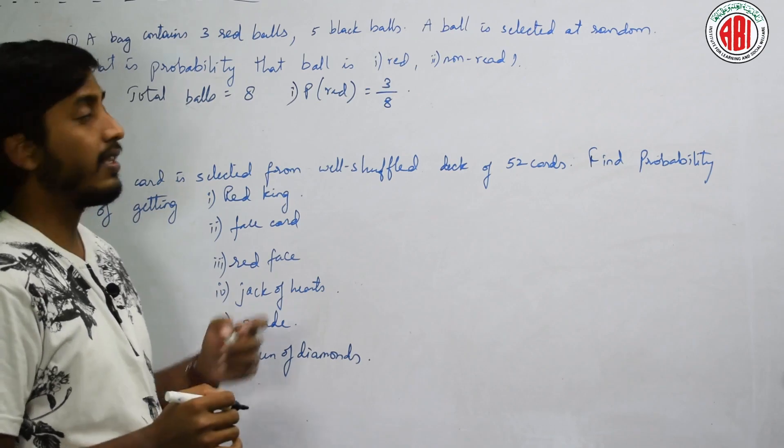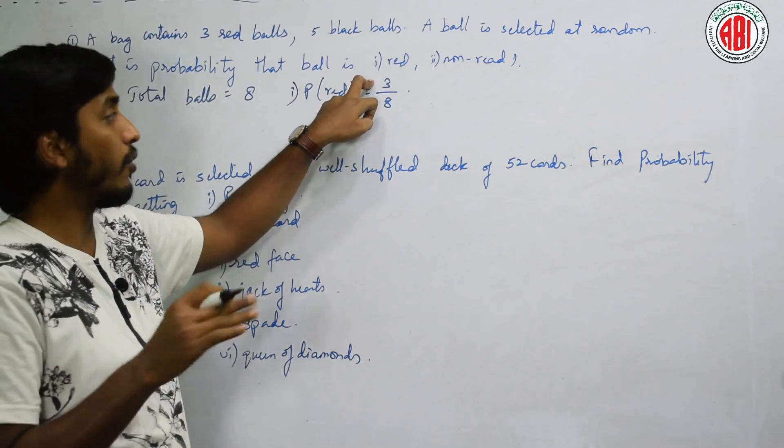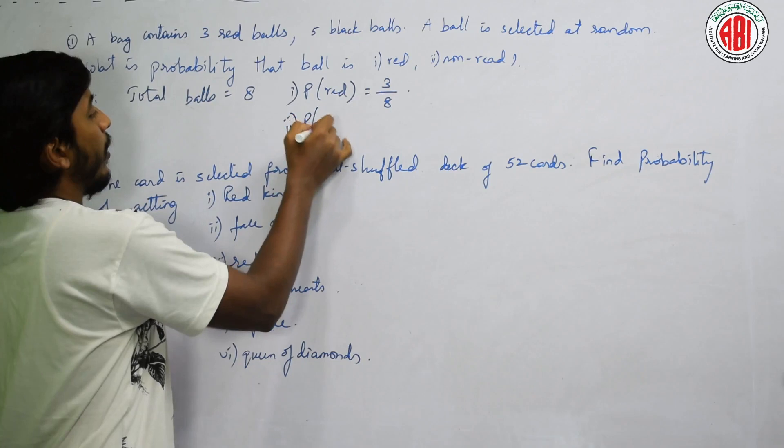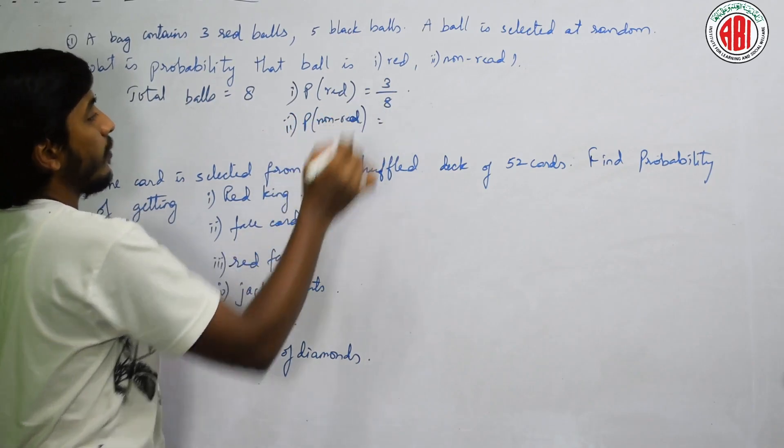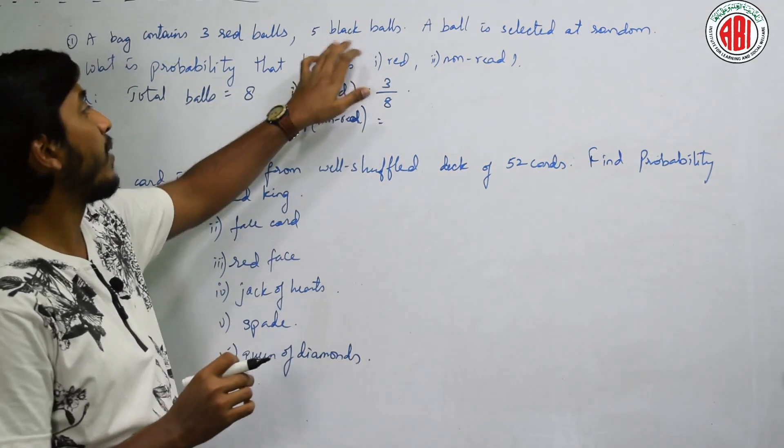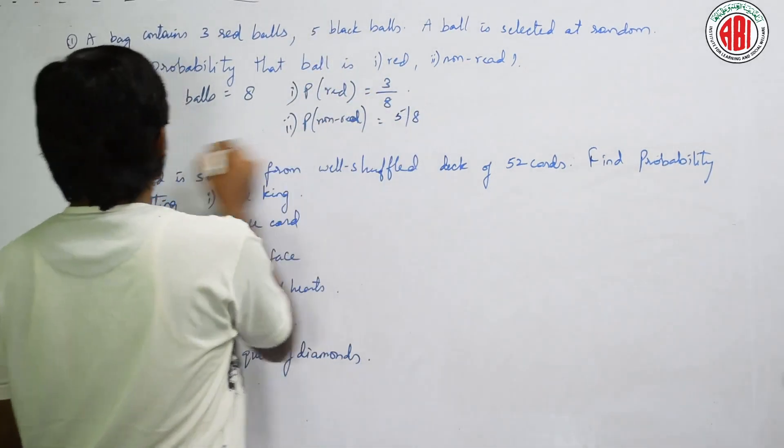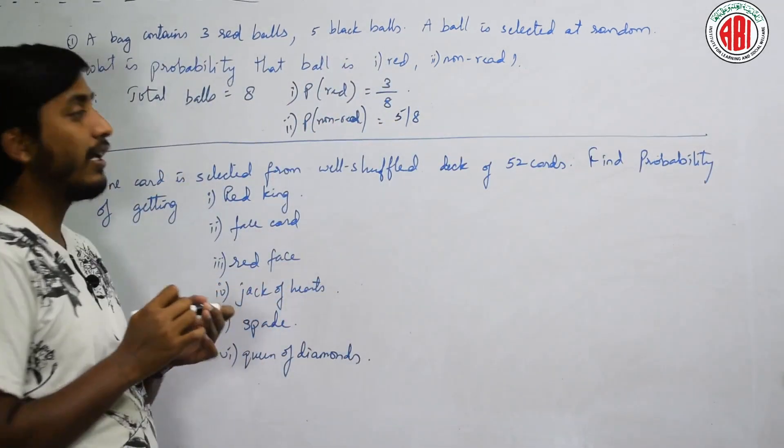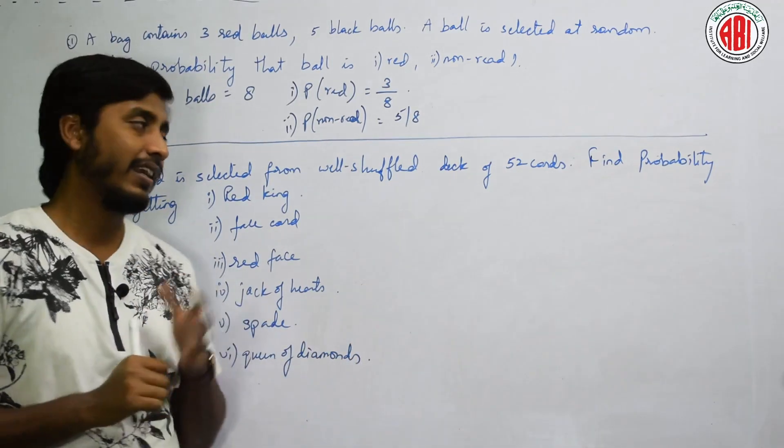Therefore, probability of getting a red ball is 3 out of 8. What is 3? The possible outcomes. Red is 3 out of total 8 balls. Nonred? Probability of nonred balls - red nahi hai to black hai na. Black me kitne ball se? 5 by 8. Did you understand?